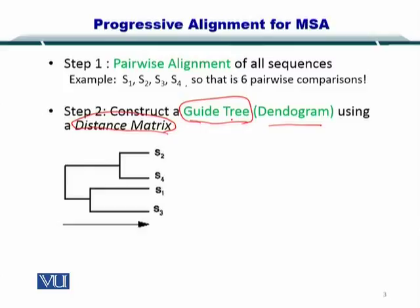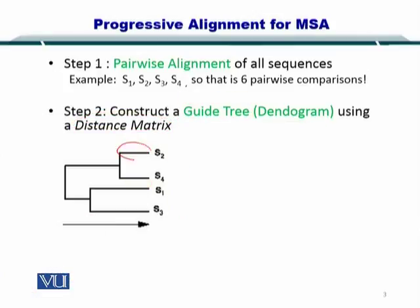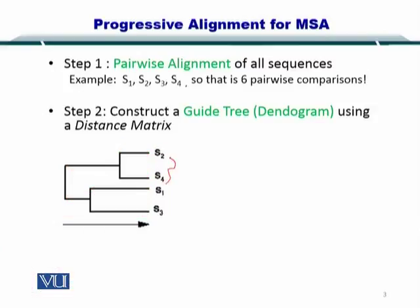For instance, this is a dendrogram or guide tree for four sequences: S1, S2, S3, and S4. To understand what this tree represents, you need to consider the length of these branches. You can see that two branches are equal in length while another has a very long length. Essentially, it means that S4 and S2 are similar to each other, while S1 and S3 are similar to each other.